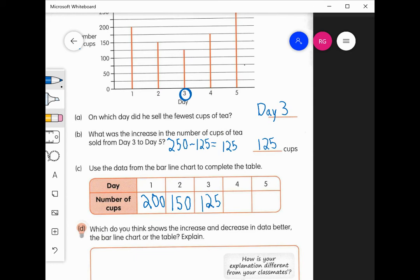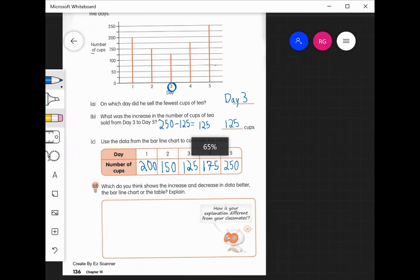And then for day four, we should say 175. And day five should be 250. So there we have the five days and the number of cups sold on each of those days.